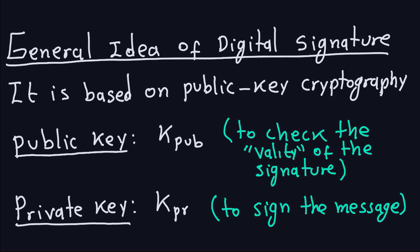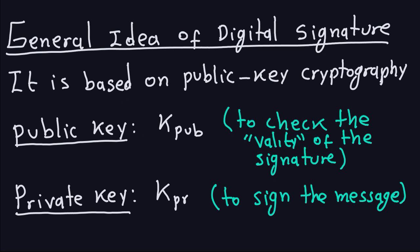Basically, what that means is we're going to have a public key, which of course, as the name says, is going to be public. We're going to denote it as KPU, just to remember there is a key and that is public. This key is going to be used to check the validity of the signature. And the private key, which is going to be denoted by KPR, just to remember there is a key and that is private, is the one that is going to be used to sign the messages.